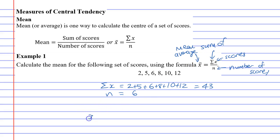So according to the formula, x-bar or mean equals the sum of the scores, 43, over n, which is 6. Essentially we've gone sum of scores over n. And from that we get 43 divided by 6, which is approximately 7.2.